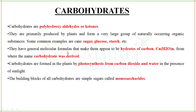They are primarily produced by plants and form a very large group of naturally occurring organic substances. Some common examples are cane sugar, glucose, and starch. They have a general molecular formula that makes them appear to be hydrates of carbon. The general formula is CnH2On, and from this — hydrates of carbon — the name carbohydrate has been derived.